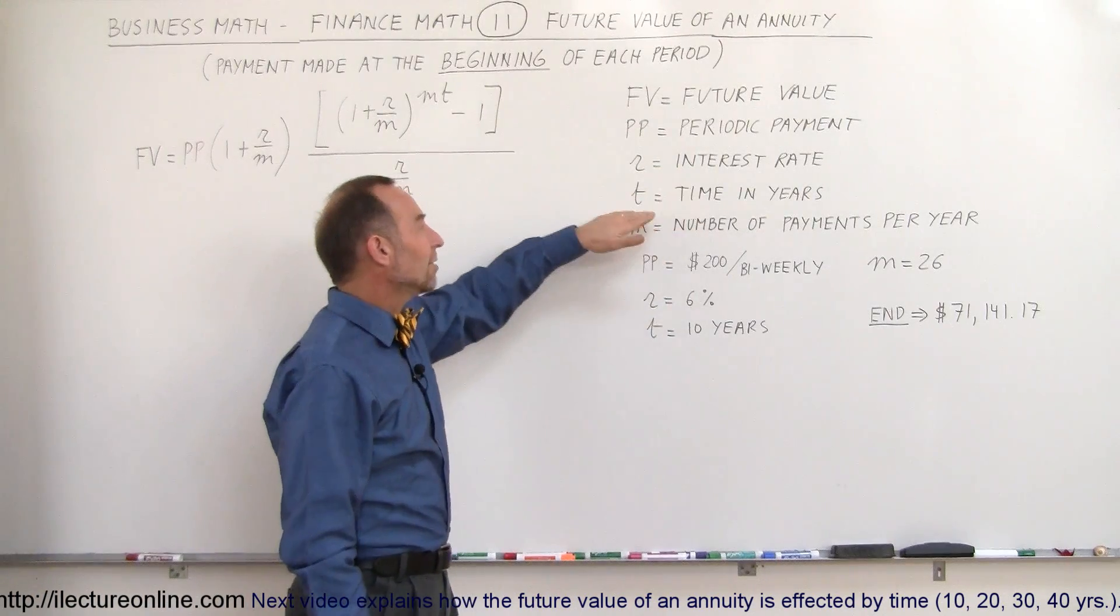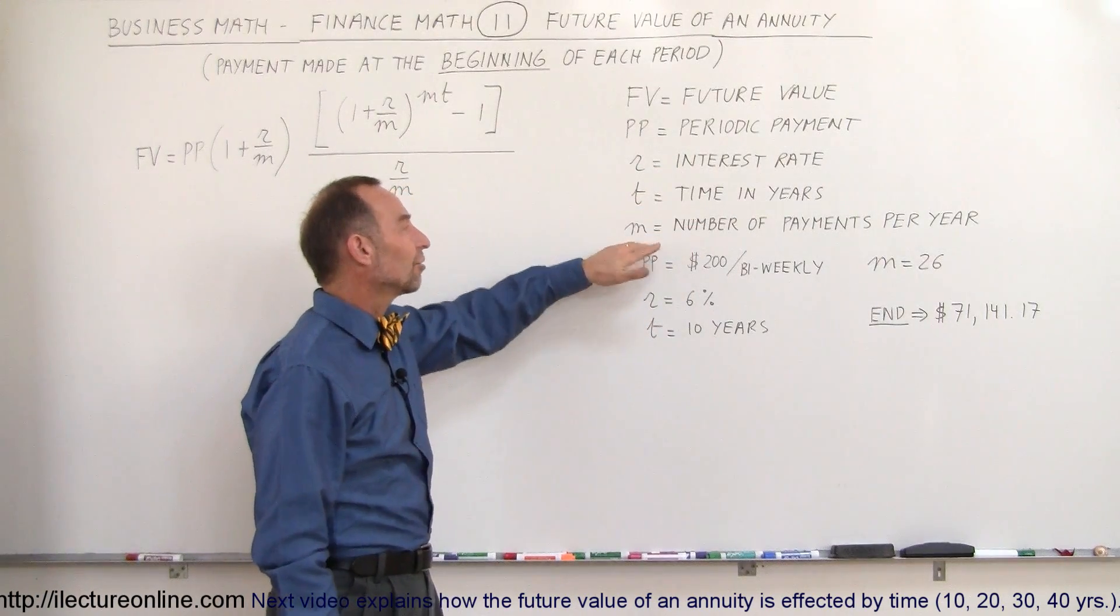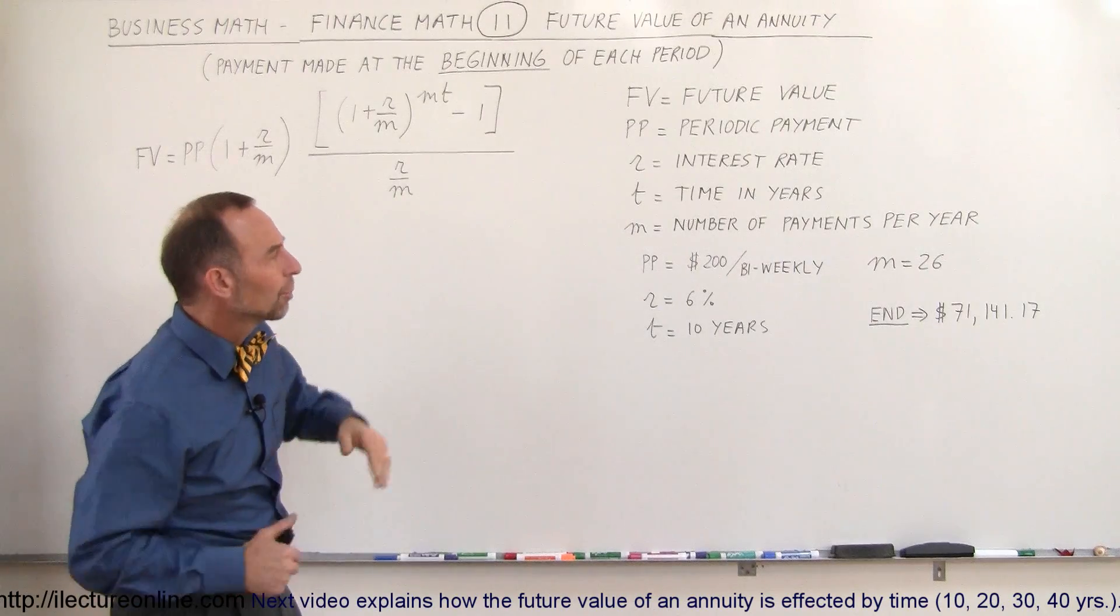The R stands for interest rate, T stands for time in years, M stands for the number of payments per year. It's kind of like the number of conversions per year.